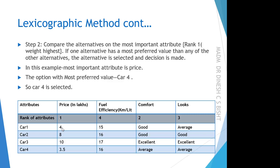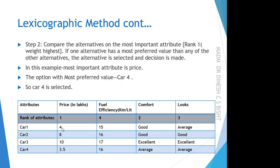In the case of a cost attribute like price, the most preferred value is the lowest value — the lesser the price, the more preferred. Car 4 is selected because it gives us the most preferable value of 3.5 lakhs. The others are 10 lakhs, 8 lakhs, and 4 lakhs — all higher in price. So Car 4 is selected, and the lexicographic method is done for this example.